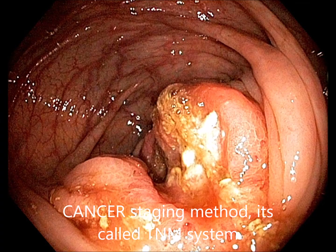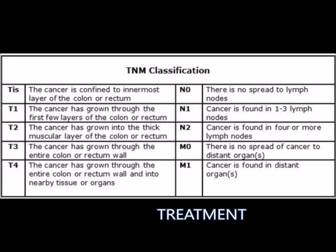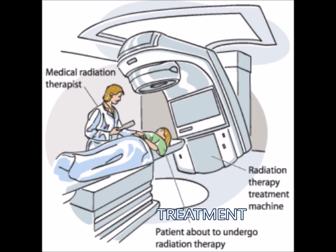In the TNM system, T1 to T4 indicates the size and direct extent of the primary tumor. N0 to N3 indicates the degree to which the cancer has spread to nearby lymph nodes. M0 to M1 indicates whether the cancer has spread to other organs in the body. For example, a reading of T1N0M0 means a small tumor that has been caught early and is treatable.